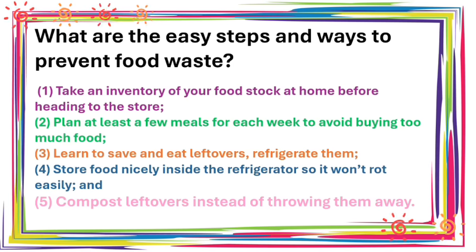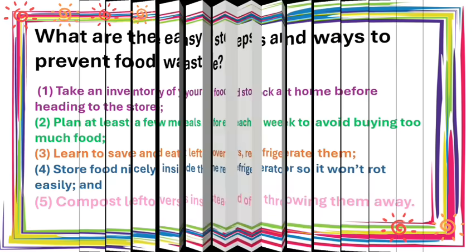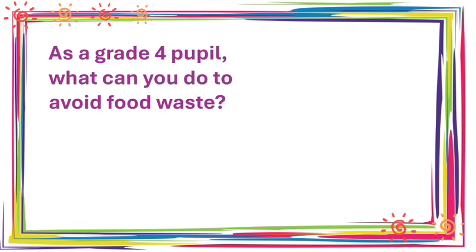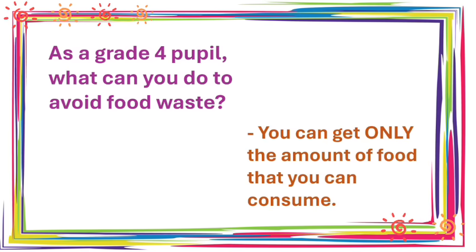What are the easy steps and ways to prevent food waste? First, take an inventory of your food stock at home before heading to the store. Second, plan at least a few meals for each week to avoid buying too much food. Third, learn to save and eat leftovers — refrigerate them. Fourth, store food nicely inside the refrigerator so it won't rot easily. Fifth, compost leftovers instead of throwing them away. As a Grade 4 pupil, you can get only the amount of food that you can consume.